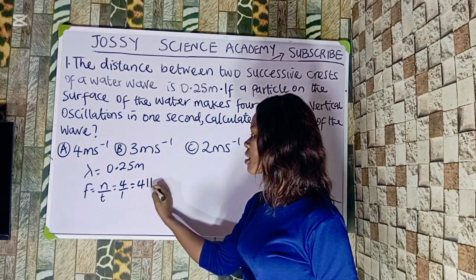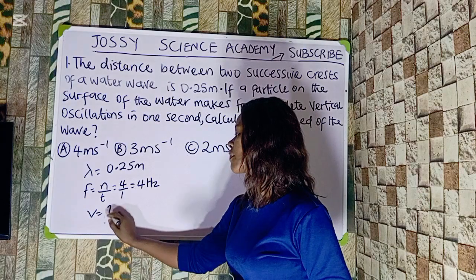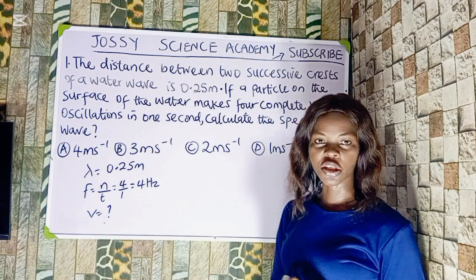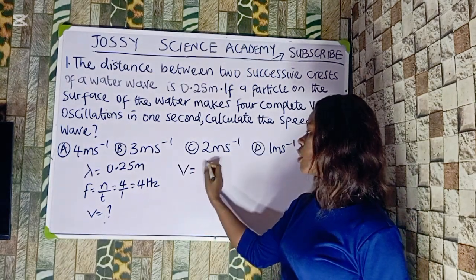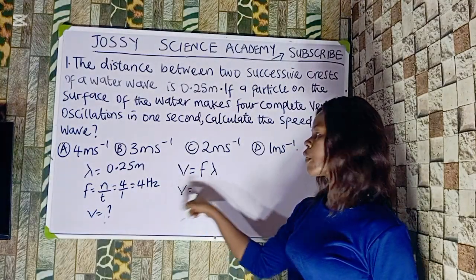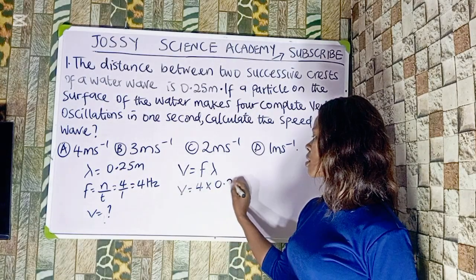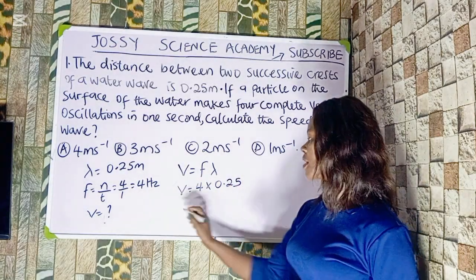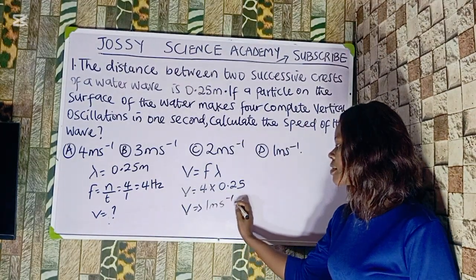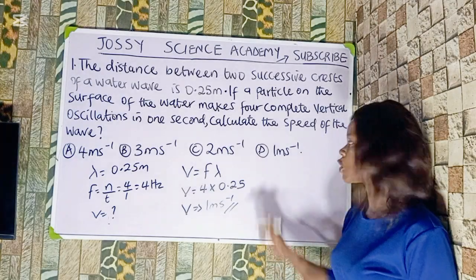We are looking for the speed of the wave. There is a relationship connecting the frequency, the wavelength, and the speed of the wave, and that relationship is V equals F lambda. So frequency is 4 hertz multiplied by 0.25, which gives us 1 meter per second. The correct option to this question is option D.